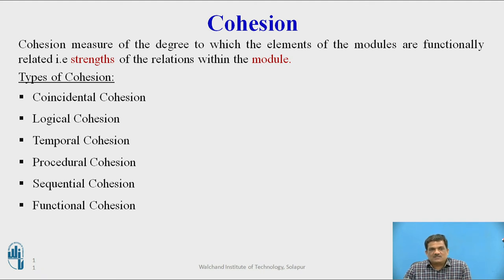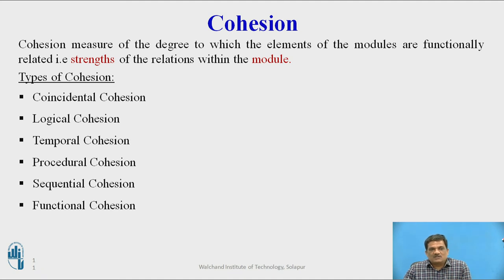Procedural cohesion means multiple elements are referring to a common procedure to perform their operations. In sequential cohesion, the output of one element acts as input to another element. In functional cohesion, the multiple elements of a module are using a single function.